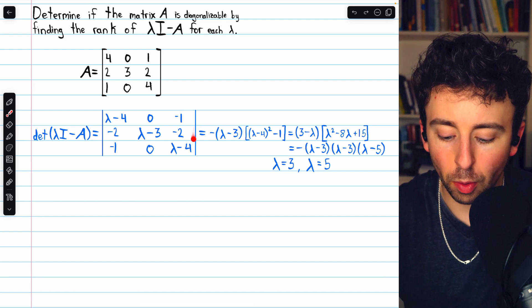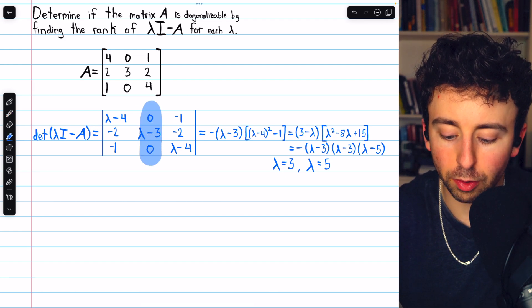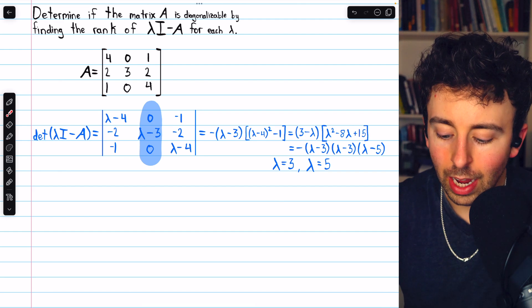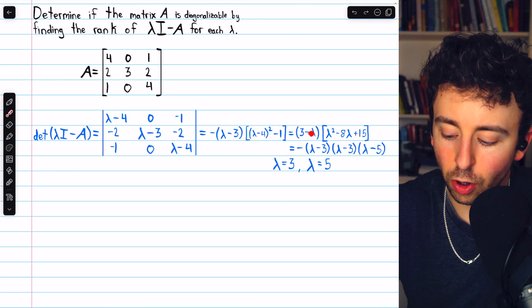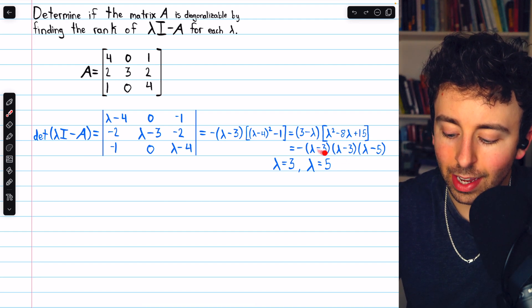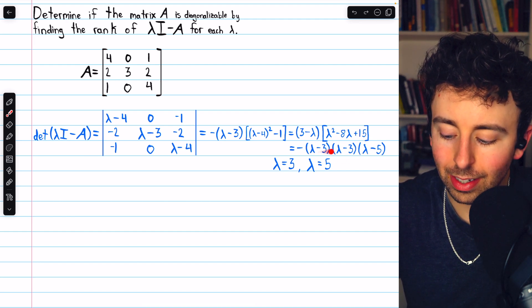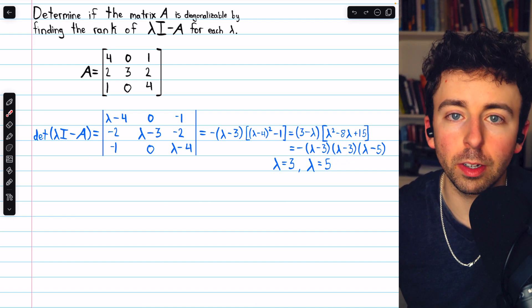We can find the determinant of this 3 by 3 matrix using a cofactor expansion along column 2, and that gets us here. Expanding and simplifying this determinant, we end up getting this factored form. So this is the factored form of our characteristic polynomial.